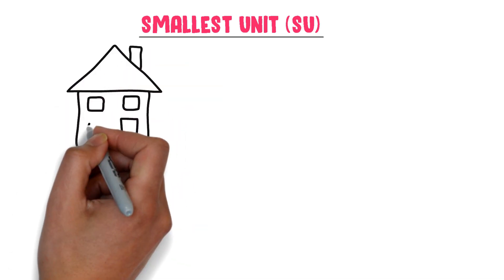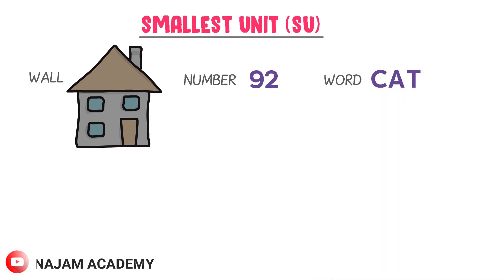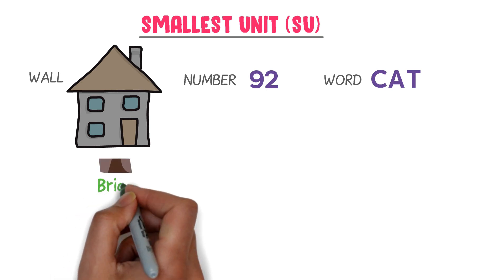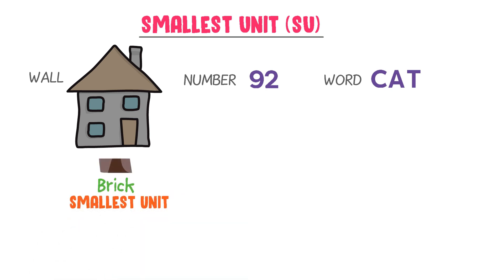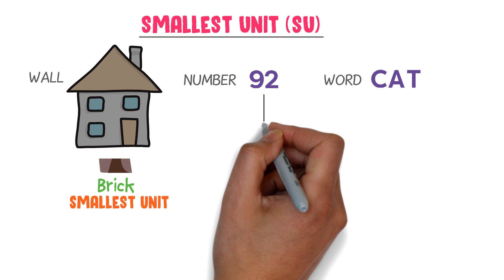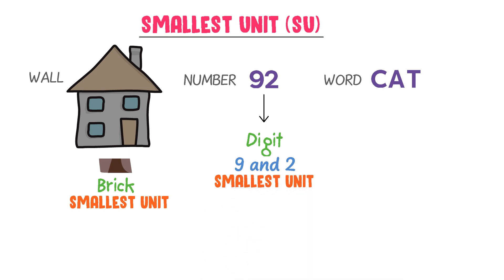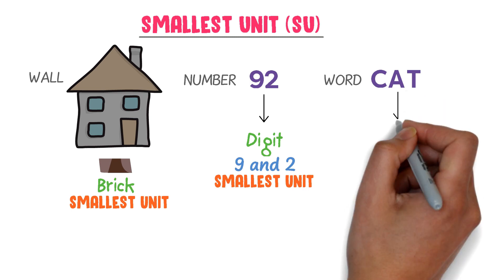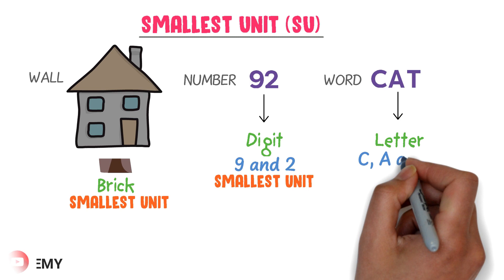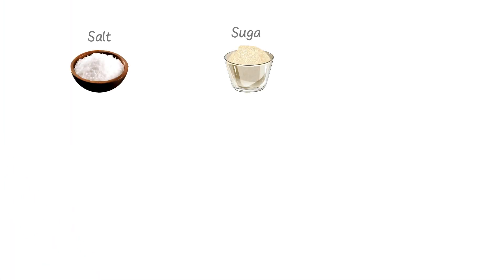Consider a wall, the number 92, and the word 'cat.' A wall is formed by combining hundreds or thousands of bricks, so a brick is the smallest unit or basic unit of the wall. The number 92 is formed from two digits, nine and two, so a digit is the smallest unit of a number. The word 'cat' is formed from three letters — C, A, and T — so any letter is the smallest unit of any word.